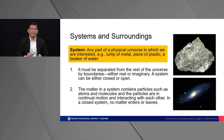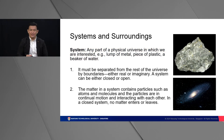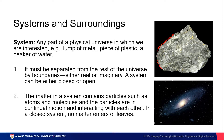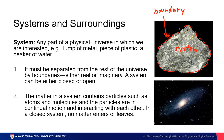That can be many different things — a lump of metal, a piece of plastic, a beaker of water. If we assume the rock is a system, let's call this the system. It is separated from the rest of the universe by a boundary, which can be either real or imaginary. A system can be described as either closed or open.